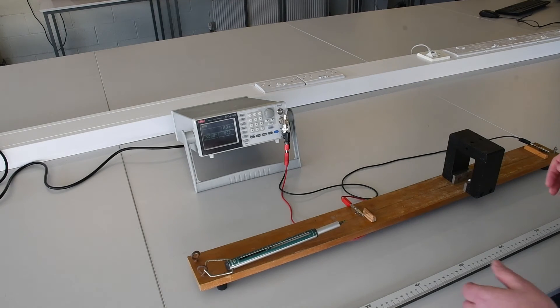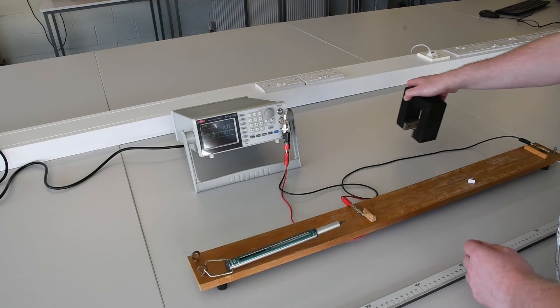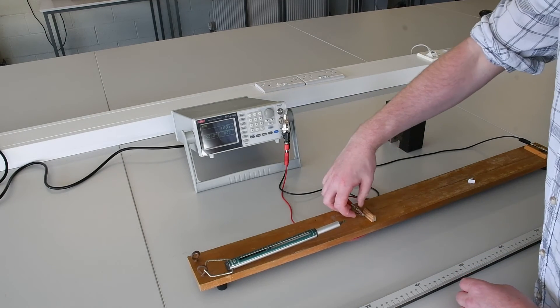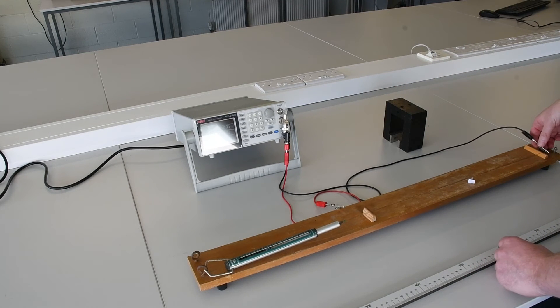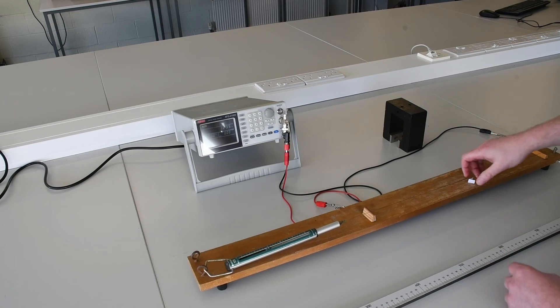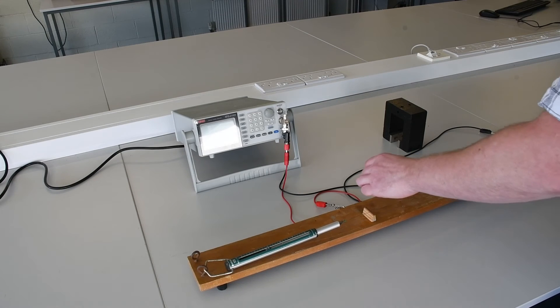Once we've taken all the measurements for a string length of 50 centimeters, we can then remove our magnet, disconnect the clips, and set a new string length. So my next measurements will be taken for a string length of 45 centimeters.